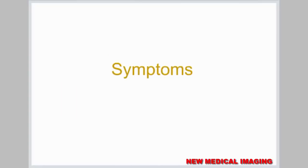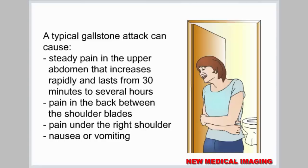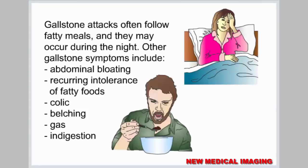Symptoms. Symptoms of gallstones are often called a gallstone attack because they occur suddenly. A typical gallstone attack can cause steady pain in the upper abdomen that increases rapidly and lasts from 30 minutes to several hours, pain in the back between the shoulder blades, pain under the right shoulder, and nausea or vomiting. Gallstone attacks often follow fatty meals and they may occur during the night.